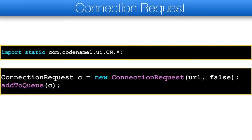Before we go to the code, notice that in order to use this code you will need to import the CN class statically. Creating a hello world GET request is as simple as adding a new ConnectionRequest to the queue. Notice that the second argument indicates that we are making a GET request and not a POST request, which is the default.